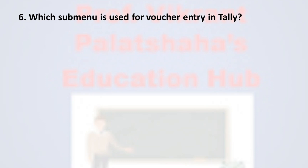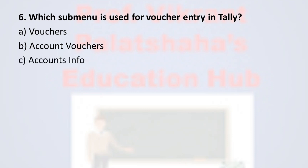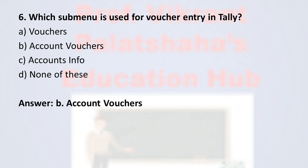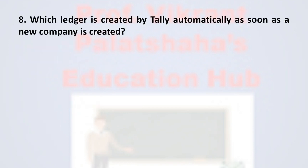Question number six: Which sub-menu is used for voucher entry in Tally? Option A: Vouchers, Option B: Account Vouchers, Option C: Accounts Info, Option D: None of these. The correct option is Option B, Account Vouchers. For voucher entry in Tally, the sub-menu used is called Account Vouchers, therefore the correct option is Option B.